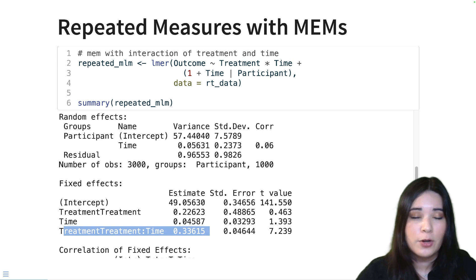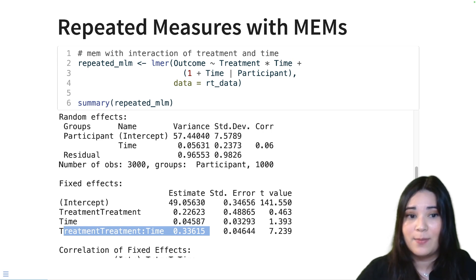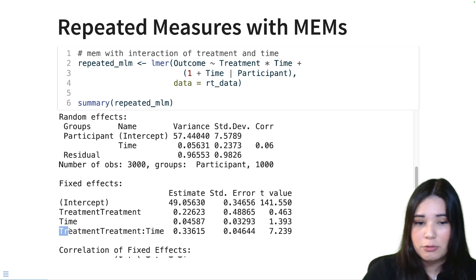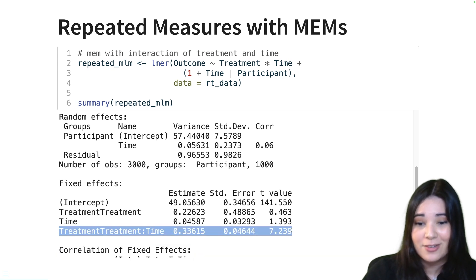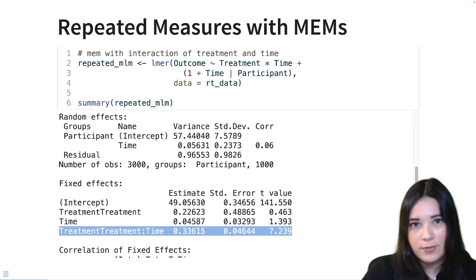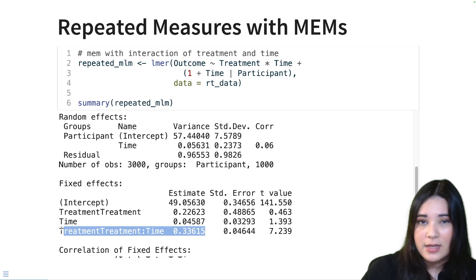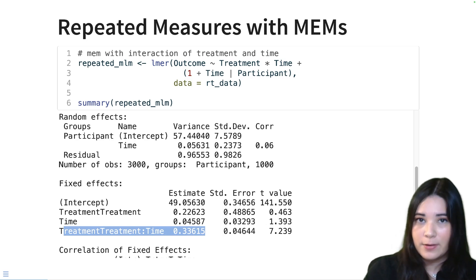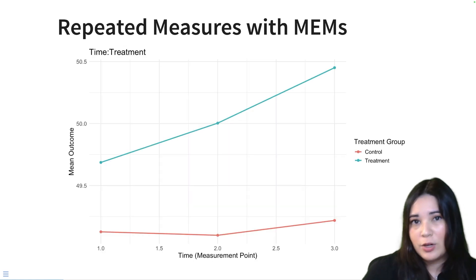We can interpret this interaction as saying: how does the interaction of time and outcome vary for people in the treatment versus the control group? We see a pretty large effect — the T value is huge, meaning that this effect is pretty large and we're pretty confident that it's a true effect. This tells us that the effect of time — pre, post, follow-up — is different for people in the control group versus the treatment group.